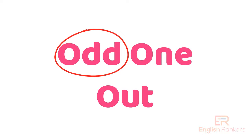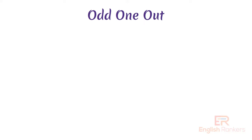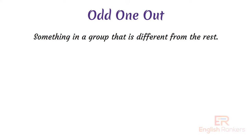Hello everyone, welcome back to English Rankers. Do you know what is odd one out? Odd one out means something in a group that is different from the rest. Let's see some examples.